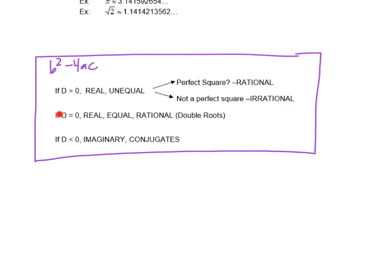If d is equal to 0, it's going to be a real number. The roots are equal, meaning the two roots you would find are the same number, and then they are rational.